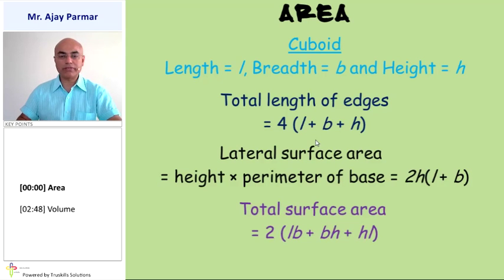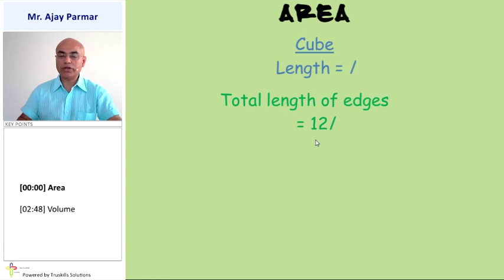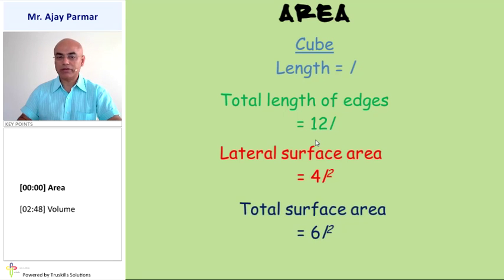Whereas the total surface area will be 2 times of LB plus BH plus HL. For a cube, where all the sides are equal, length is equal to L. The total length of all the edges would be 12L. Its lateral surface area will be 4L square and the total surface area will be 6L square.